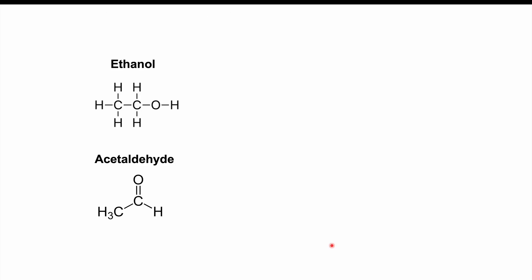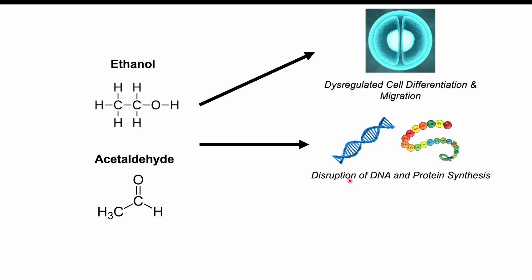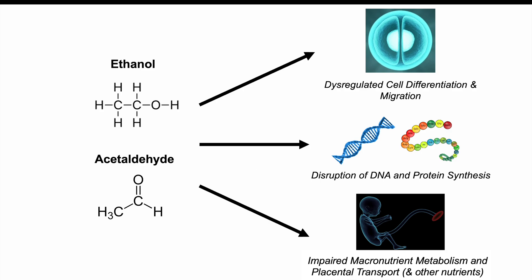Beyond the central nervous system, ethanol and acetaldehyde cause dysregulated cell differentiation and migration, disruption of DNA and protein synthesis, and impaired macronutrient metabolism — including carbohydrates, lipids, and proteins. They also impede proper placental transport of macronutrients and zinc, leading to suppressed fetal growth. Ethanol also causes long-lasting dysregulation of the hypothalamic-pituitary-adrenal (HPA) axis, leading to issues with stress regulation in the fetus, infant, and developing child.